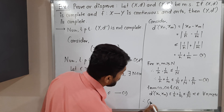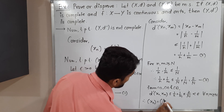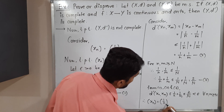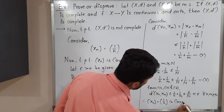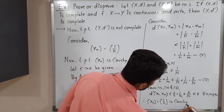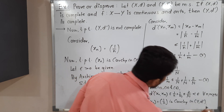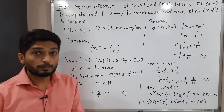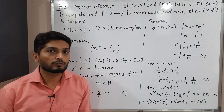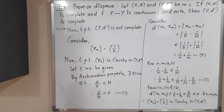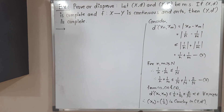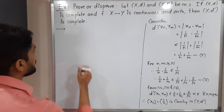Therefore, x_n = 1/n is a Cauchy sequence in (Y, d'). Now we have to prove it is not convergent in (Y, d').